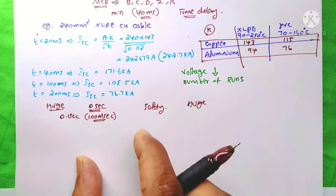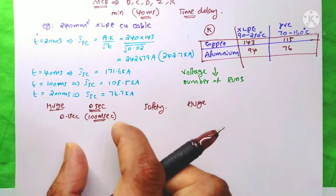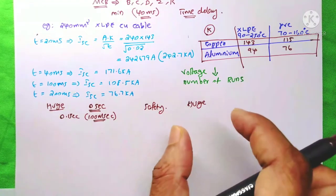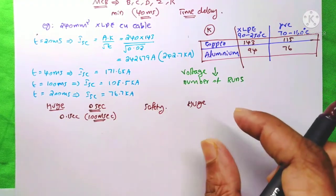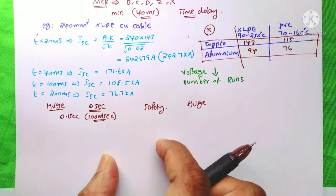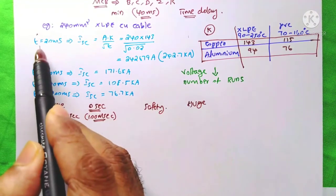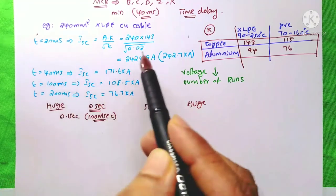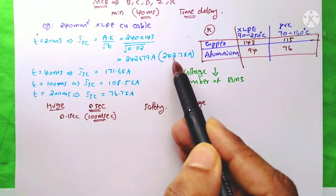We need to compare that short circuit capacity of the cable with the system short circuit that is going to happen when a short circuit appears on the system. When you take a minimum tripping time, the short circuit capacity is 242 kA.